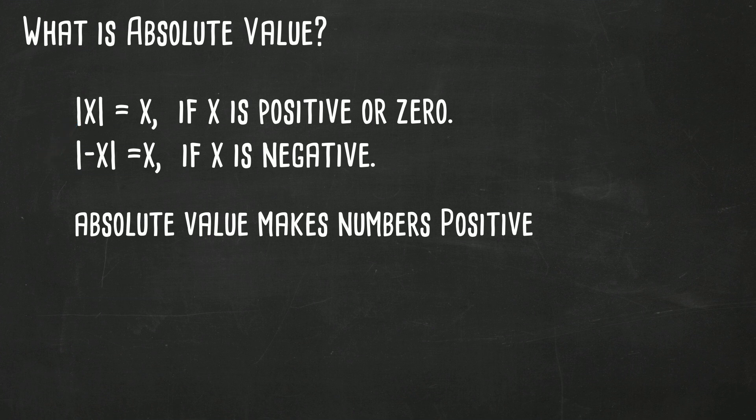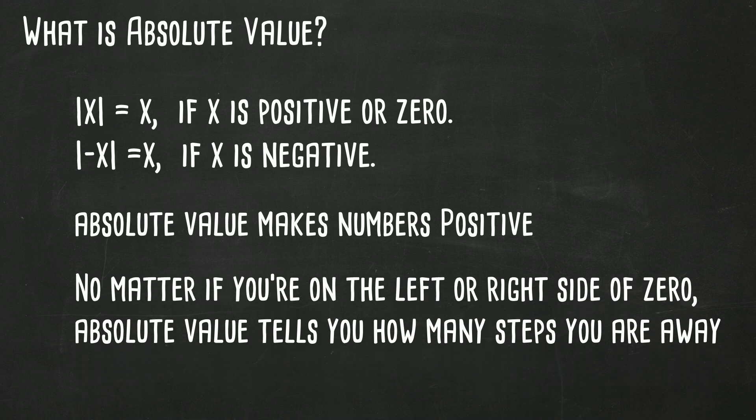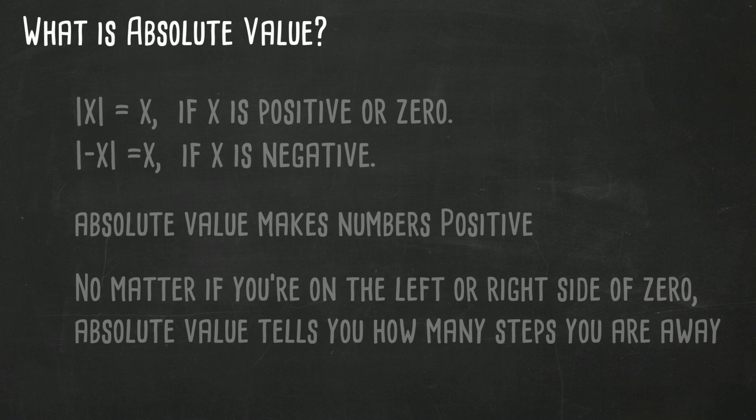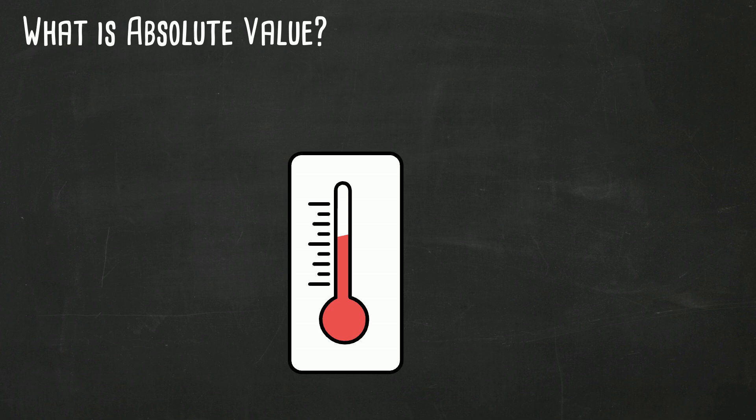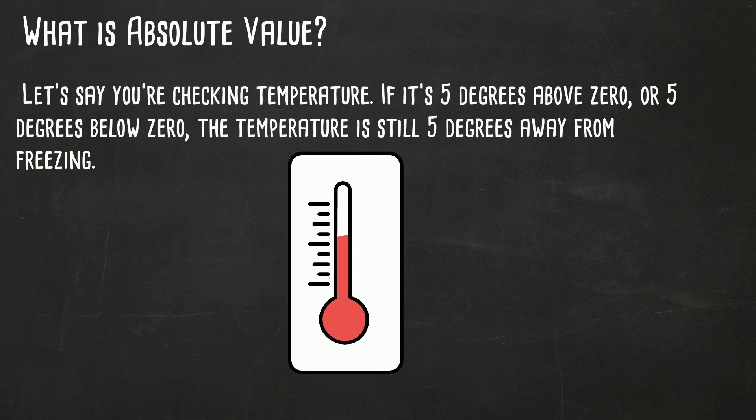So if you're on the left side of zero or the right side of zero, absolute value still tells you how many steps you are away. Let's take a look at an example. Say you're checking temperature. If it's five degrees above zero or five degrees below zero, the temperature is still five degrees away from zero. So it would have an absolute value of five.